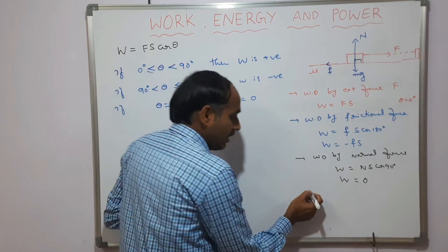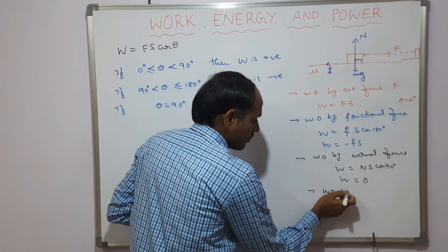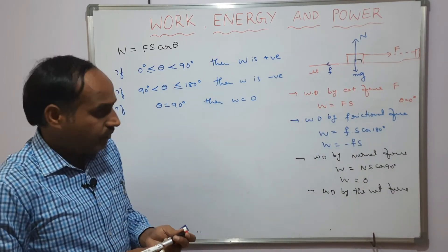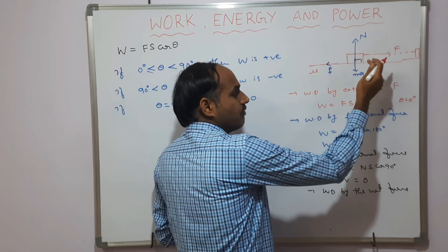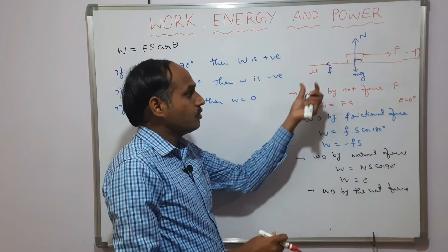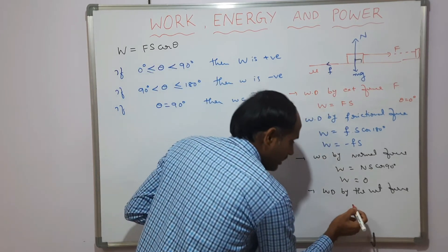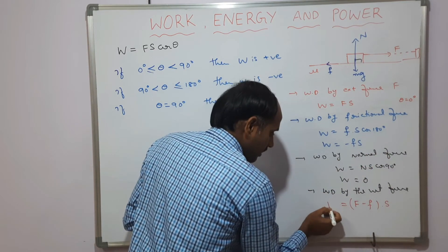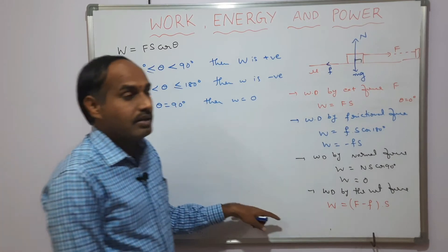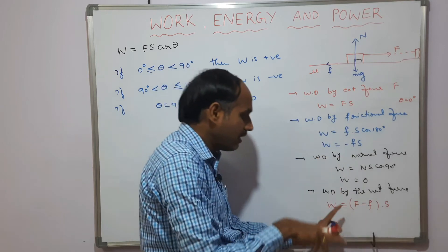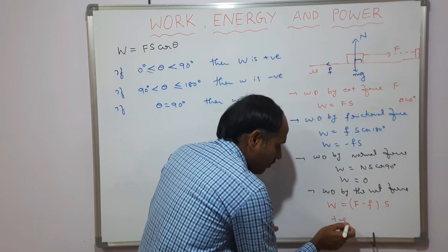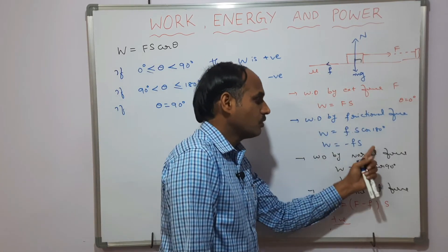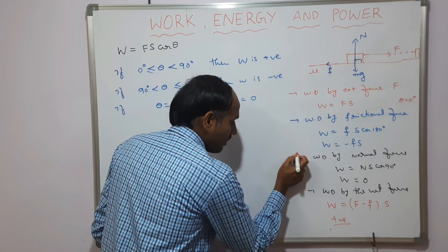For work done by the net force: the net force on the body is the external force F minus the frictional force, multiplied by displacement s. Since the net force is in the direction of displacement, this work done is positive. Depending on the direction of force relative to displacement, work done can be positive, negative, or zero.